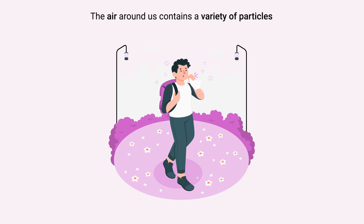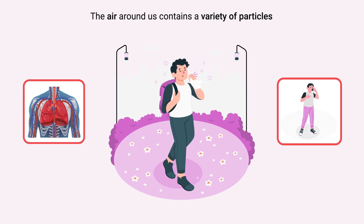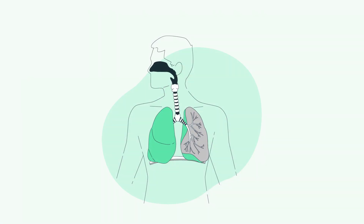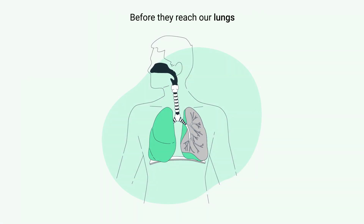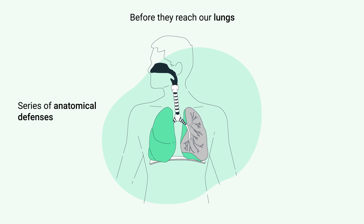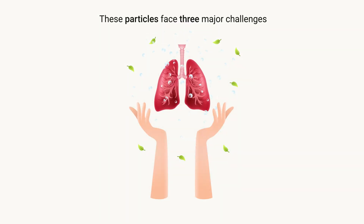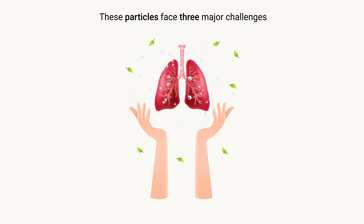The air around us contains a variety of particles including dust, pollen, and pollutants. When these particles enter our respiratory system, they can cause significant health issues. However, before they reach our lungs, they must navigate a series of anatomical defenses that have evolved to protect us. These particles face three major challenges on their way to the deepest parts of the lungs.